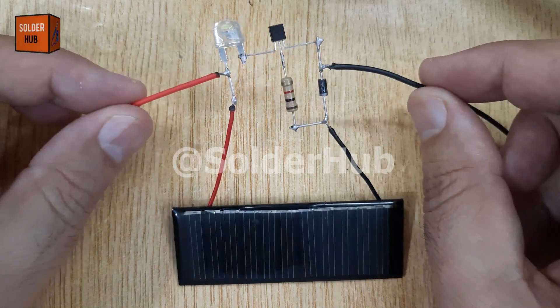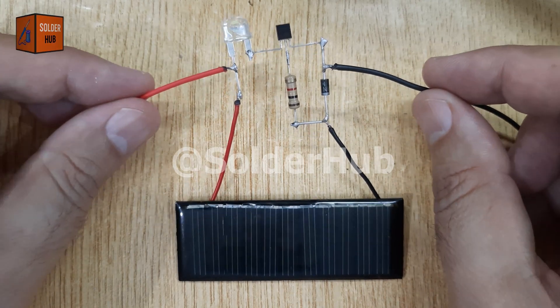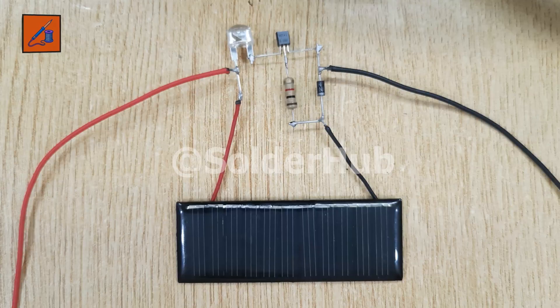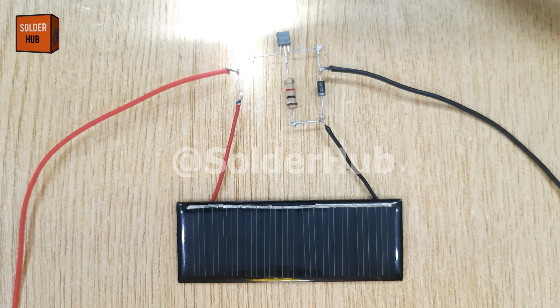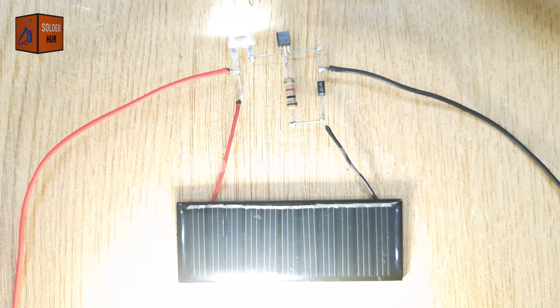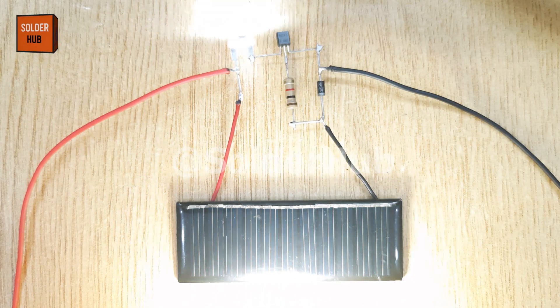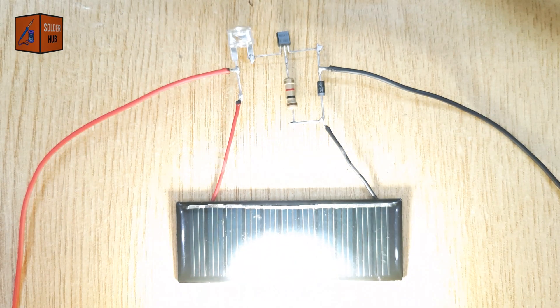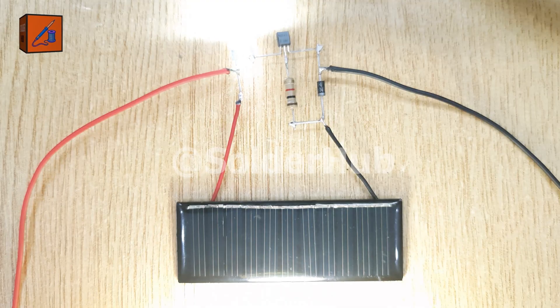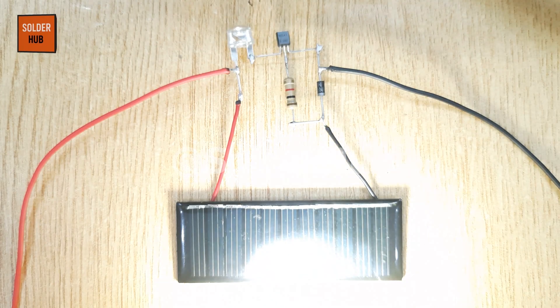Today in this video, I'm going to build a very interesting and practical project: an auto on-off streetlight circuit using a mini solar panel. This smart circuit turns the light on automatically at night and off during the day. Make sure you watch this video until the end, because you're going to love how simple yet powerful this project is.